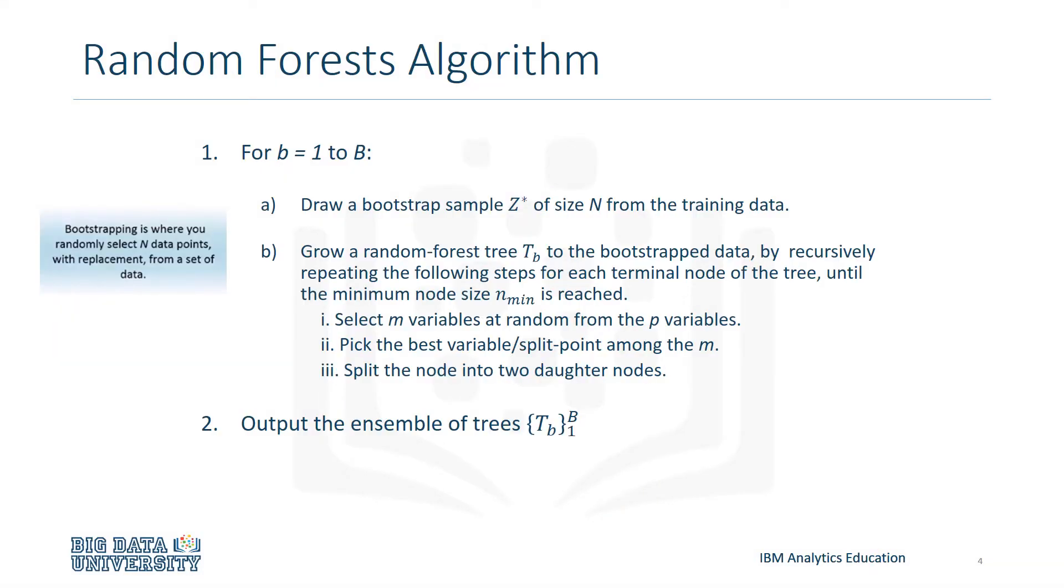Now, let's take a look at a random forest algorithm. We start by having capital B number of trees we want to create. A small b represents a single tree, so we iterate from one tree to capital B, representing multiple trees. Next, we want to draw a bootstrap Z star of size N from the training data.